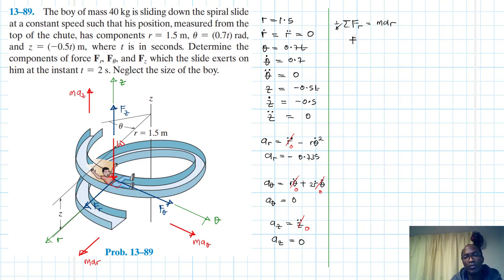So we have F r is equal to M A r, which is just equal to M is 40 times A r. We calculated A r as equal to minus 0.735. Therefore, F r is just going to be equal to minus 40 times 0.735. This gives us minus 29.4 Newtons. A minus just means the direction is in the opposite, so this just means it's going towards the center of curvature.